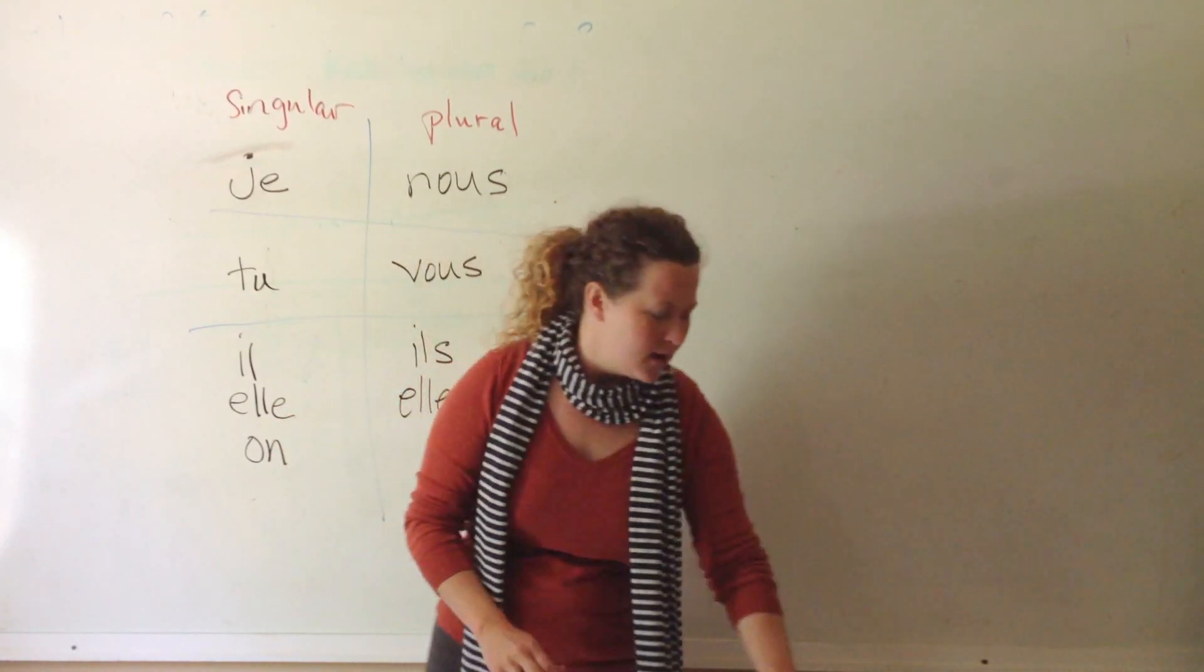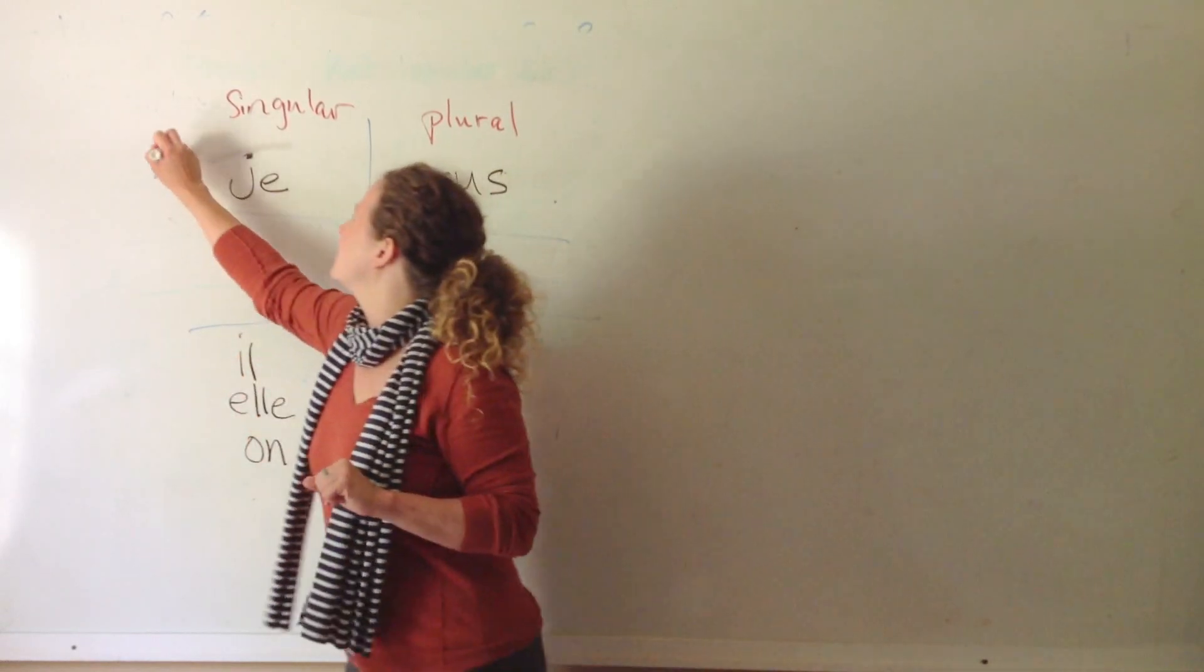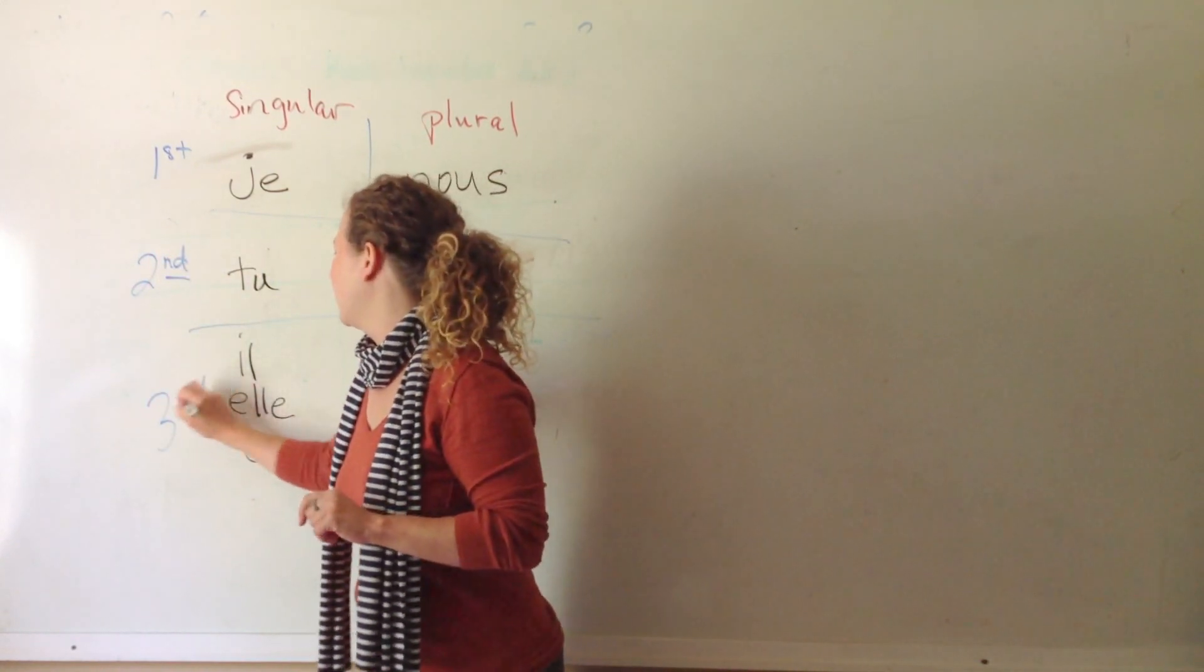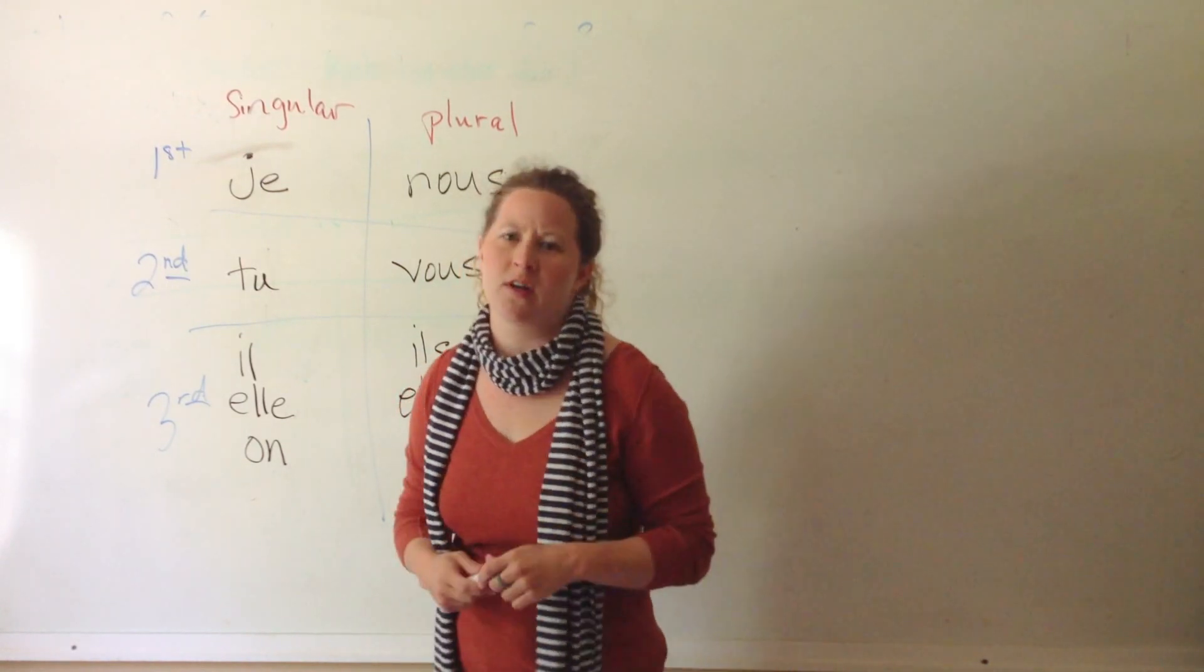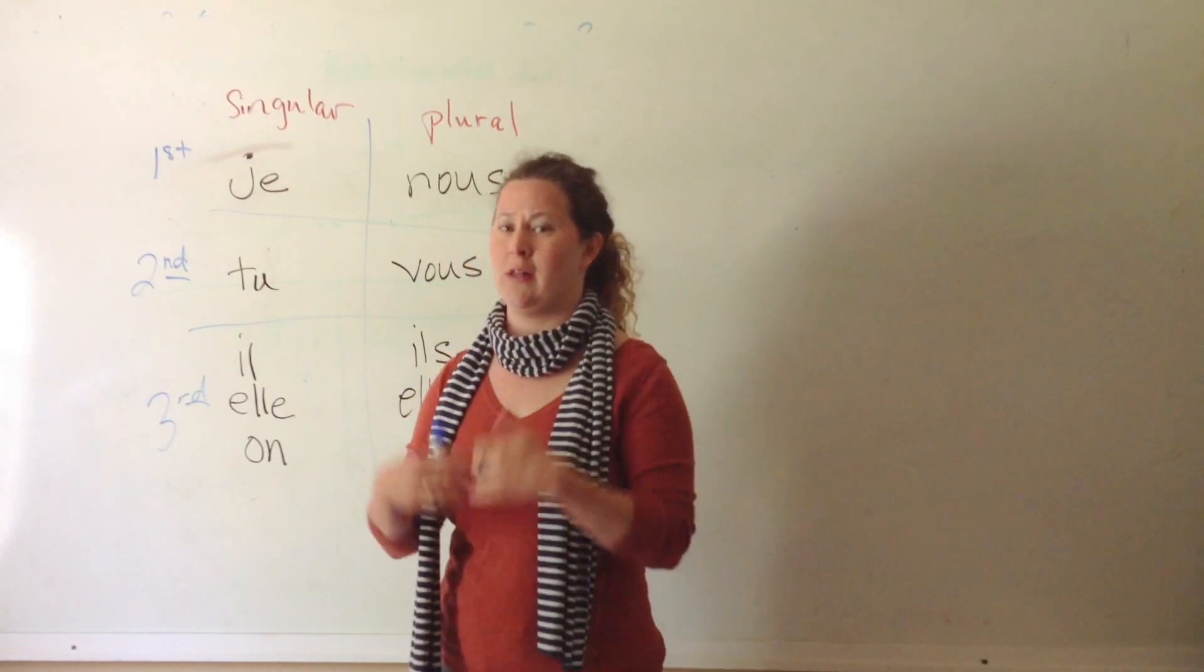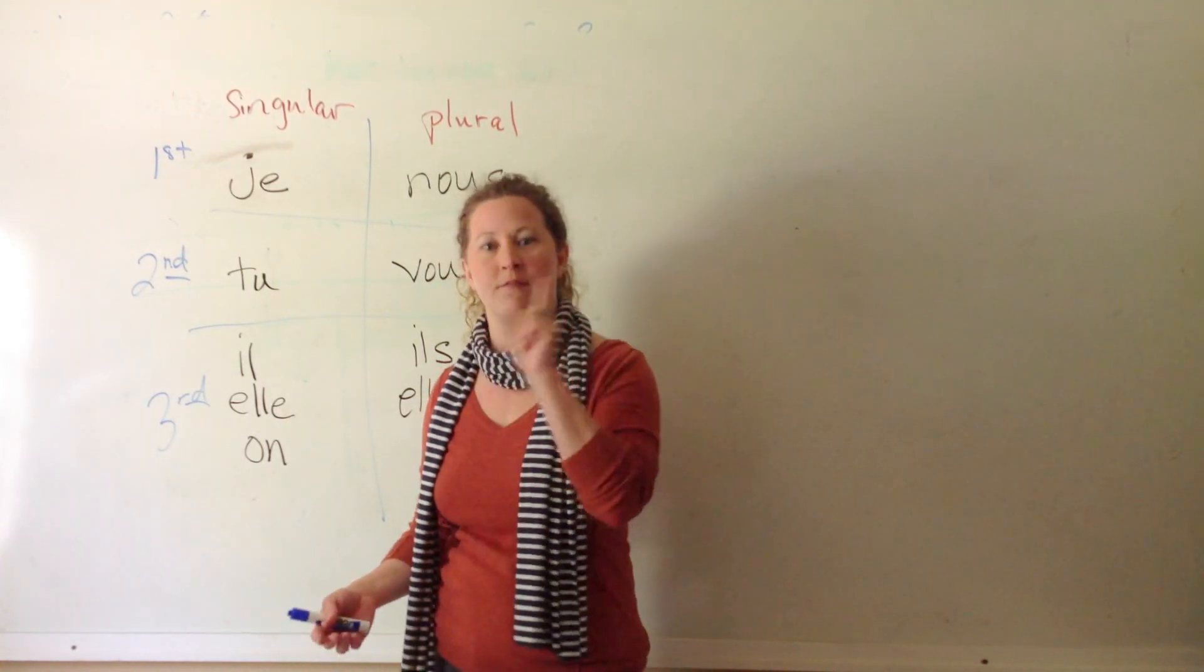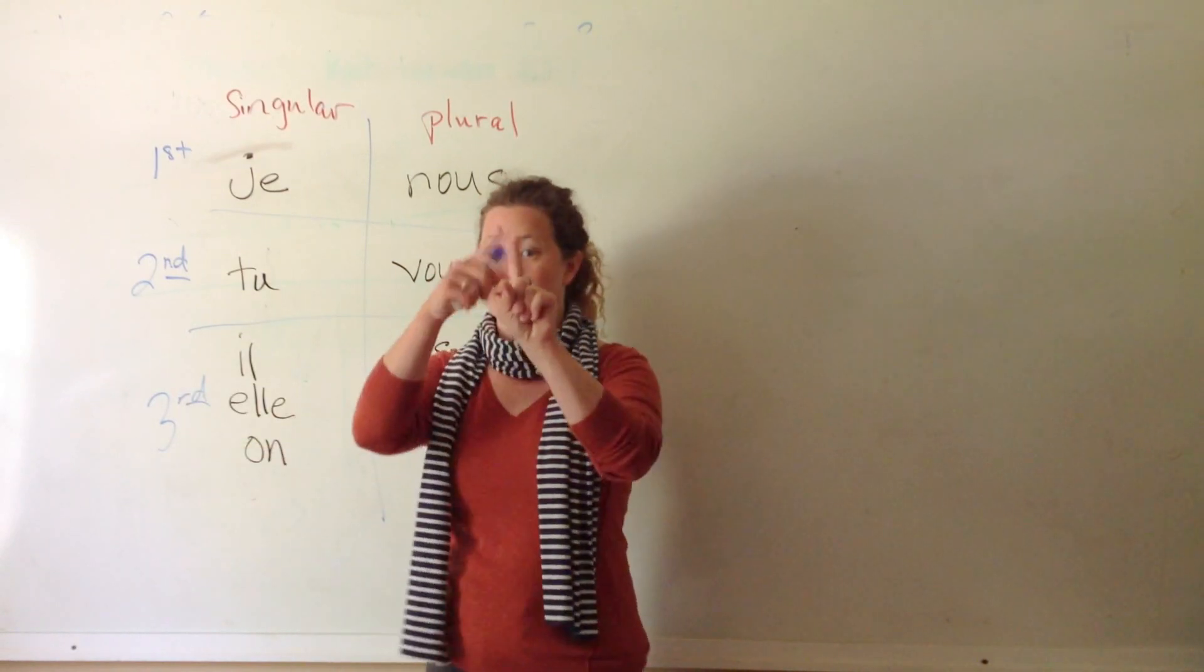Everything over here, you're only dealing with one person. So, it is singular. Everything over here, since it ends in S, it's plural. Okay. And then you just get to count. And if you can count to three, then you've set this chart up. I'm pretty sure you can do it. So, this is first person, second person, and third person.